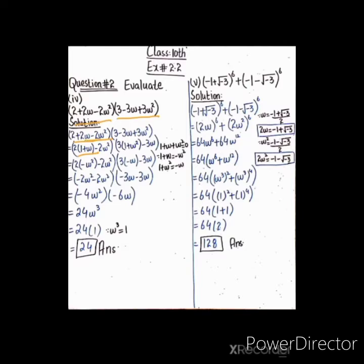تو (1 + ω) کی value (1 + ω + ω²) = 0 سے نکالیں، جو کہ (-ω²) کے equal ہے۔ دوسرے expression میں 3 اور 3ω² سے 3 common لیا، اندر (1 + ω²) رہا جو (-ω) کے equal ہے۔ -3ω اور 3 میں سے 3 common نہیں لیا کیونکہ اندر (1 - ω) بنتا جو کسی property میں نہیں ہے۔